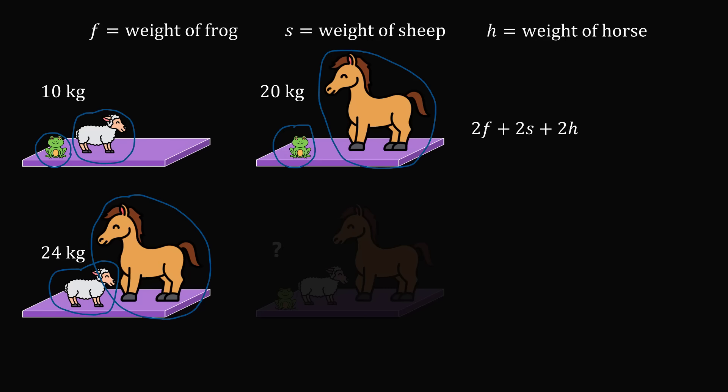This is 2F plus 2S plus 2H. We also know that this will be equal to the combined weights that are shown. So this will be equal to 10 plus 20 plus 24.